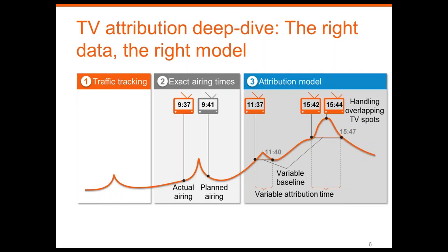We also want to make sure the user's geolocation lines up with the broadcast area of the TV show or channel where we have the airing. Secondly, we need exact airing times. For example, a media plan might say we want to air at 9:41, but the actual airing happens at 9:37. That's four minutes off, and we miss the entire uplift if we go off the media plan. Exact airing times are really important.